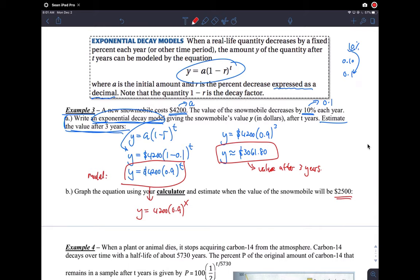And then you have to ask yourself, we've done this many times too. What number are they giving me here? So they're saying, graph the equation in your calculator and estimate when. When is a time question. What will time be, or on your calculator, what will X be. When this happens, the value of the snowmobile is 2,500.